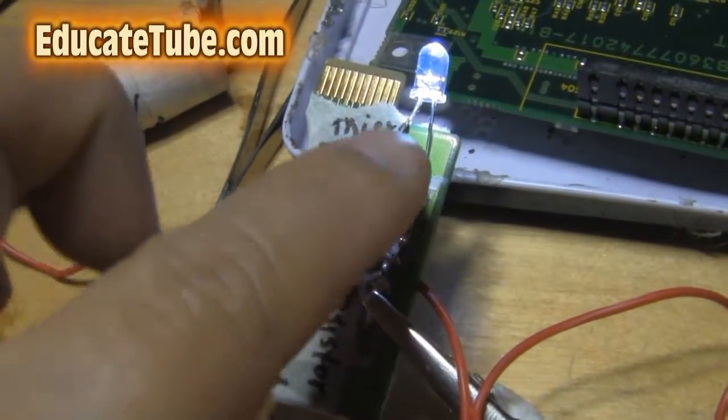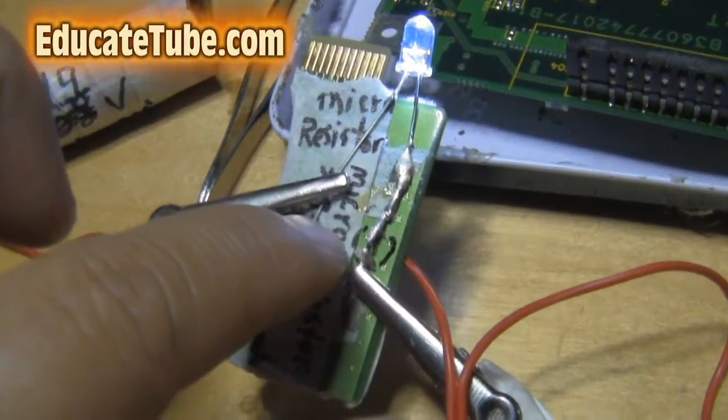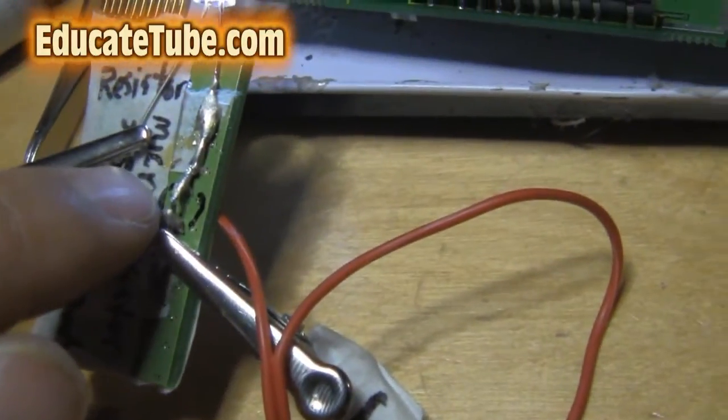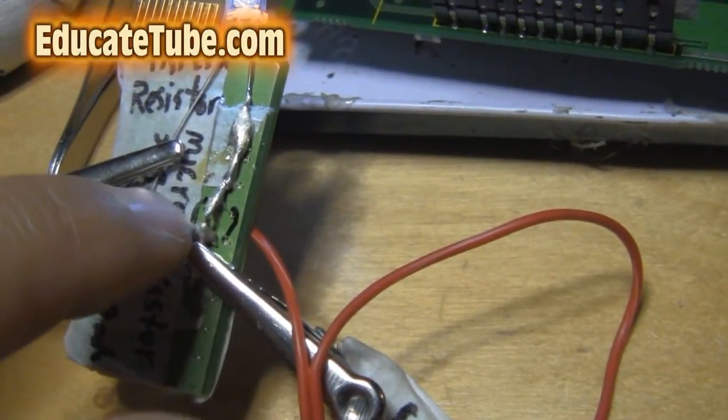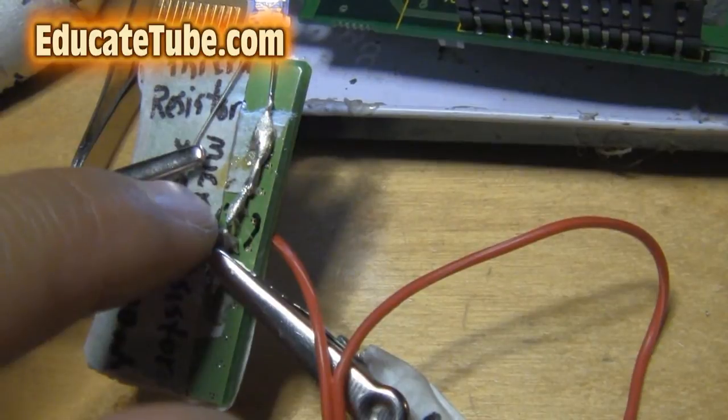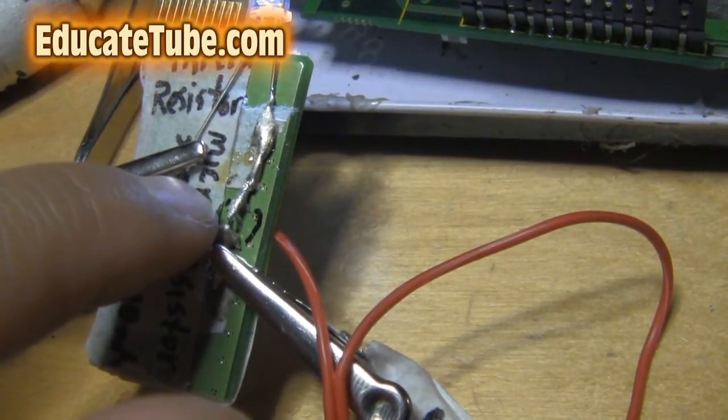You can see the little dot here. The negative terminal goes through the SMD resistor, which is about 393 ohms, toward the negative side of the battery terminal. It's working.